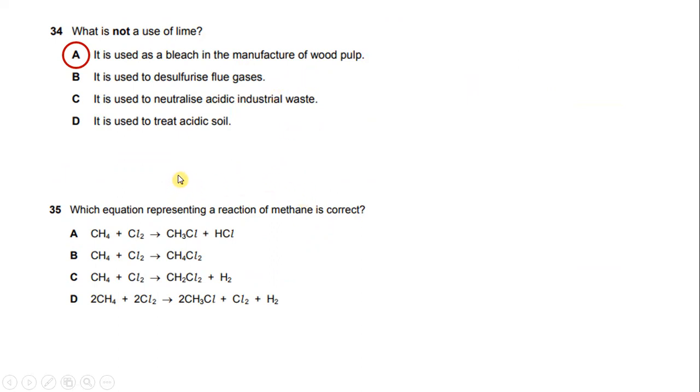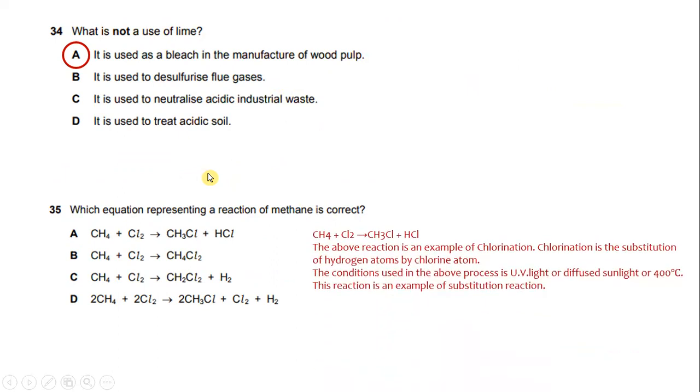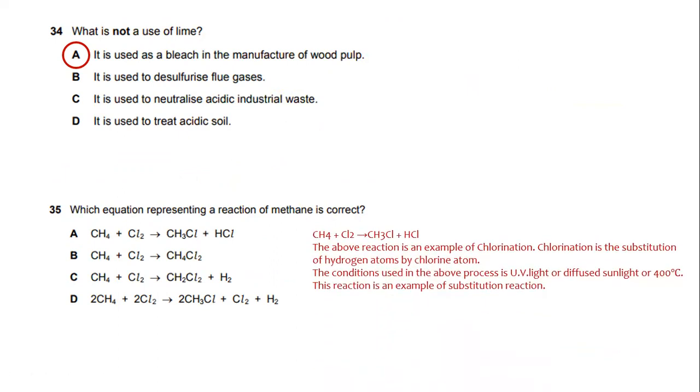Which equation representing a reaction of methane is correct? The reaction shown is an example of chlorination. Chlorination is the substitution of a hydrogen atom by a chlorine atom. The condition used is UV light or diffused sunlight or 400 degrees Celsius. This reaction is an example of a substitution reaction. So the answer for this question would be A.